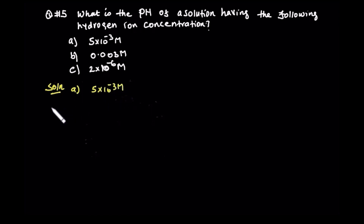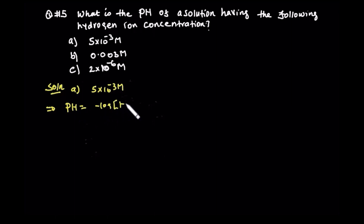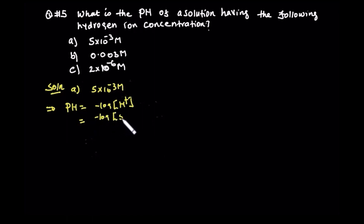So, pH is equal to the antilogarithm of the hydrogen ion concentration. pH equals antilogarithm of hydrogen ion concentration, which is 5 times 10 to the power of minus 3 mol. The mod part is determined.